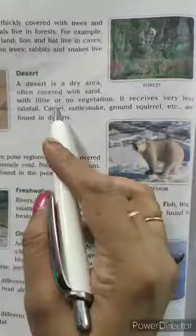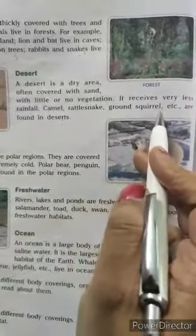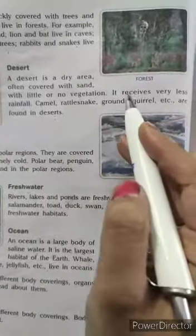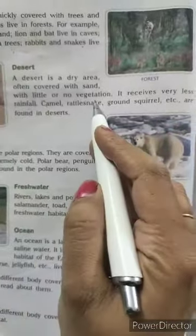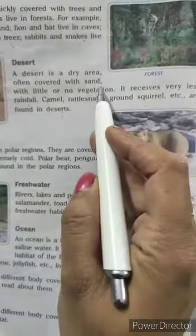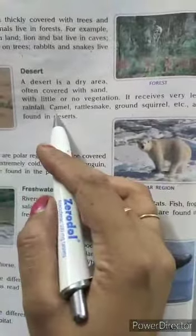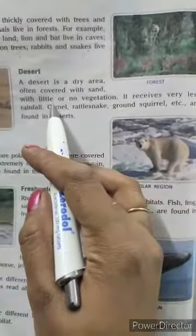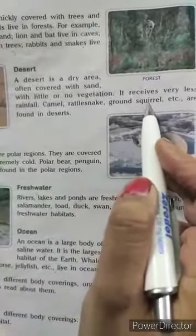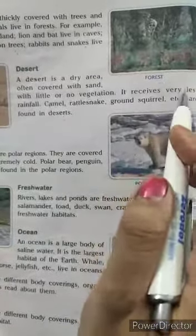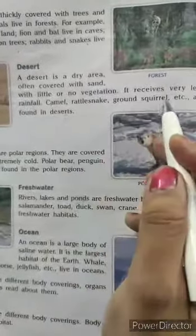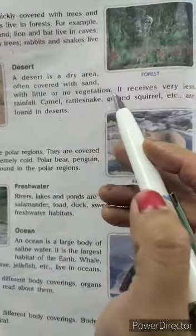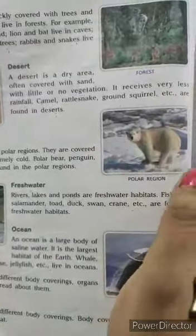These animals are those that require very little water. Because as we discussed, there is very little vegetation and very little rainfall in the desert. When rainfall is less, vegetation and plants are also less, so the animals that survive there also do not need much water. Animals such as camel, rattlesnake, and ground squirrel are adapted to this environment.